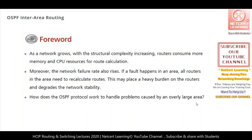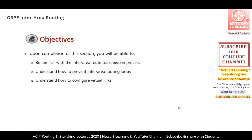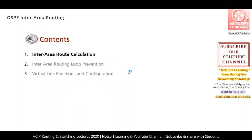The solution is to use multiple areas. Upon completion of this topic, you will be familiar with the inter-area route transmission process, understand how to prevent inter-area routing loops in OSPF, and learn how to configure virtual links. This chapter covers inter-area route calculation, loop prevention by the OSPF protocol, and the function and configuration of virtual links.